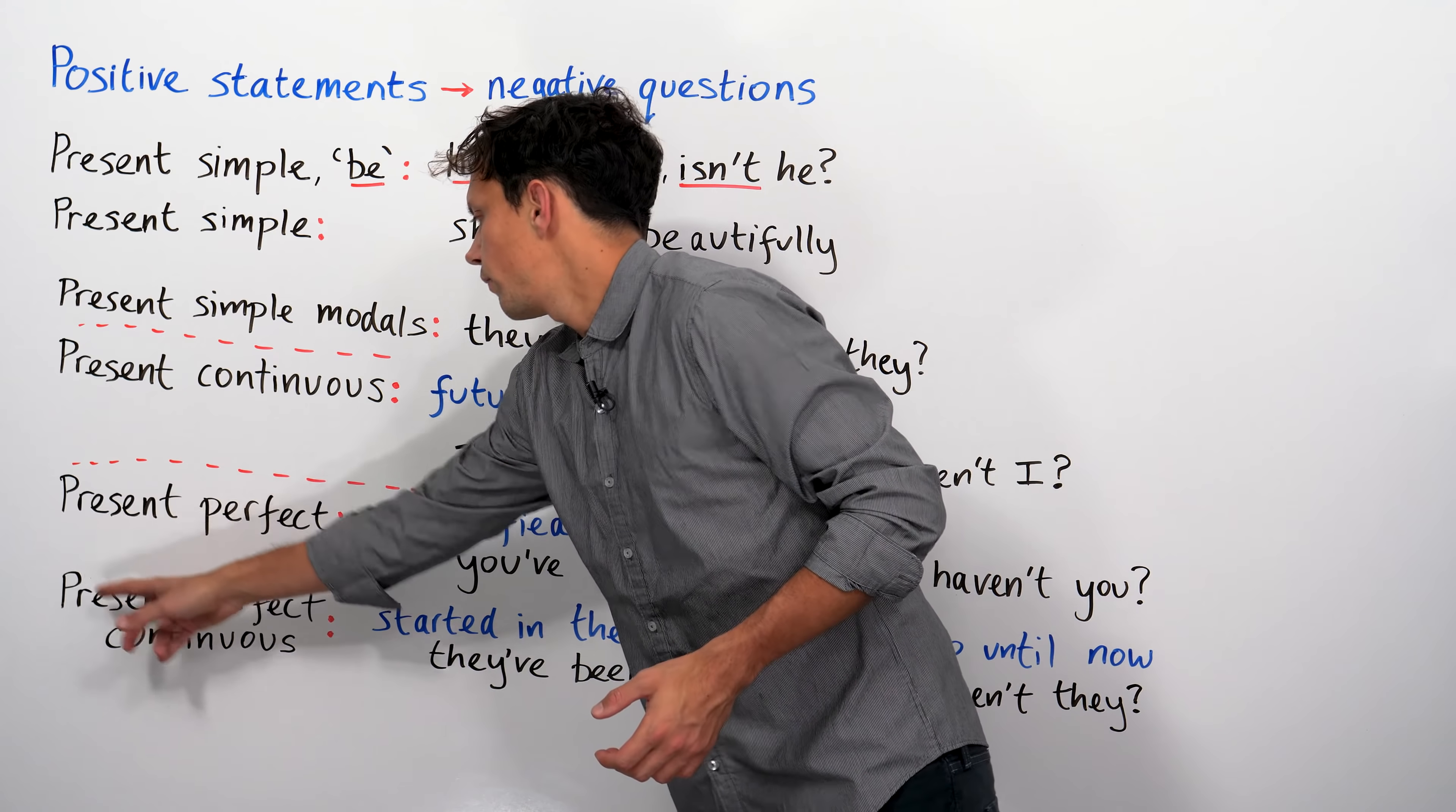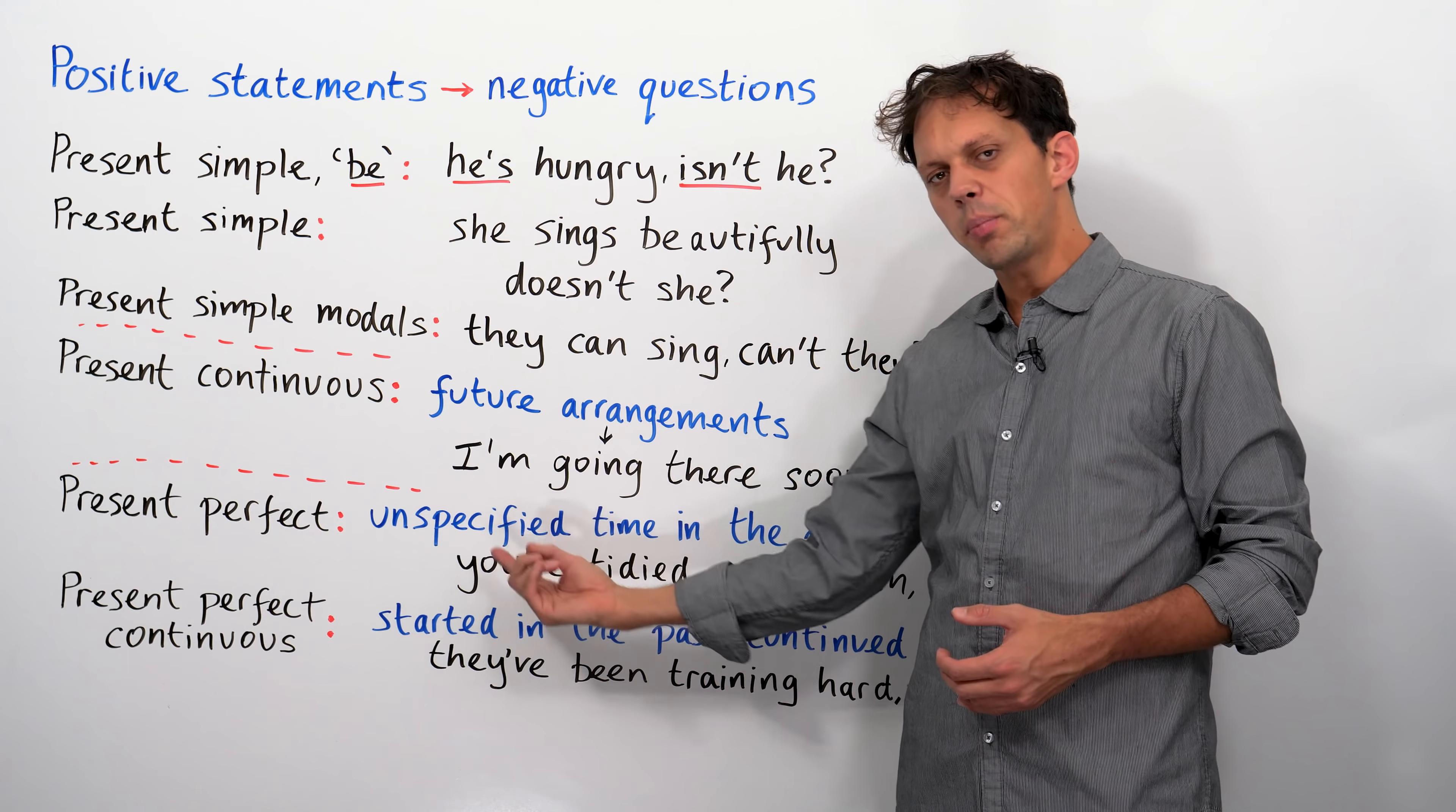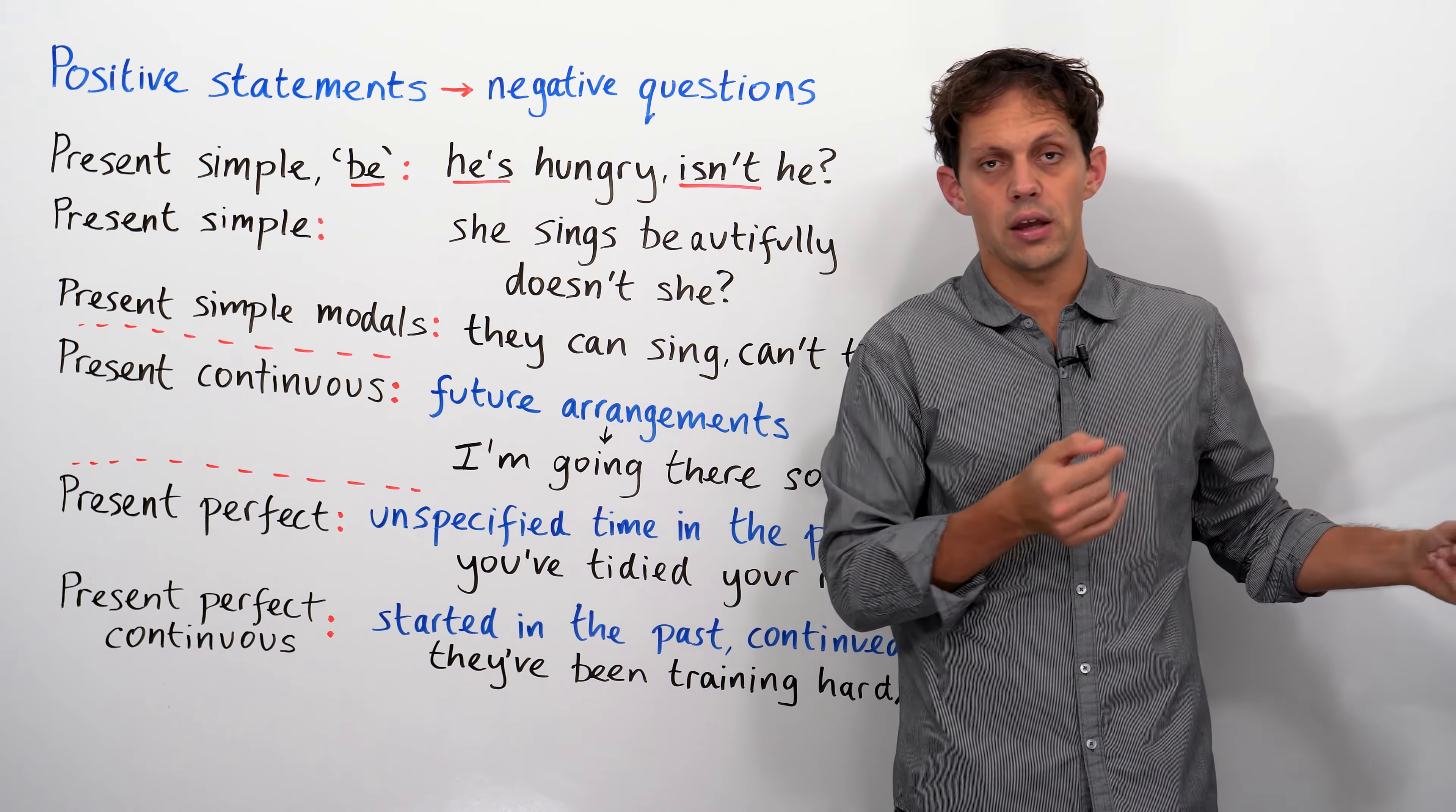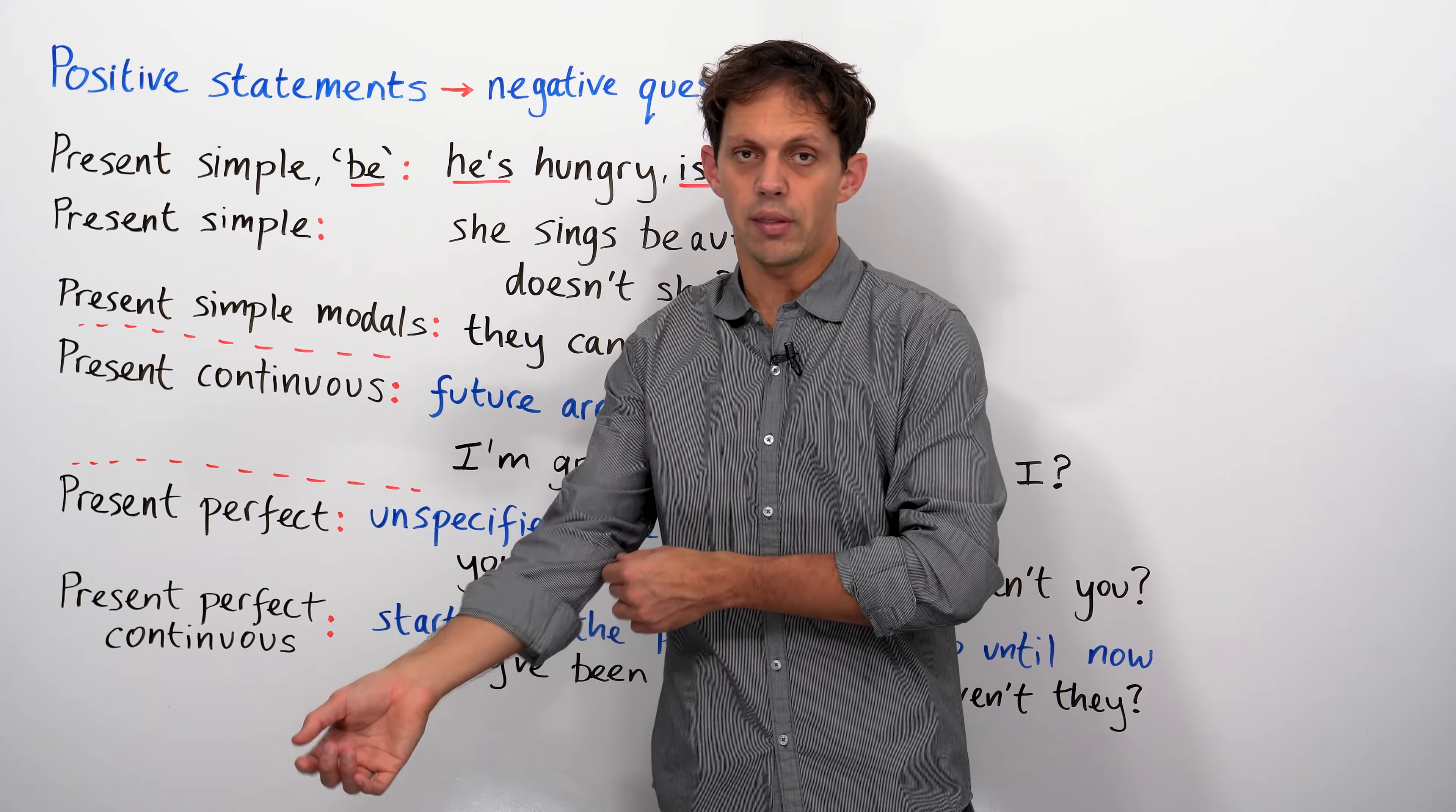Now, forms of the present tense that are actually referring to the past. The present perfect. Now, the present perfect refers to an unspecified time in the past. So, there's no definite time phrase saying that it was at like 4.42 yesterday or last Saturday. That's not the present perfect.